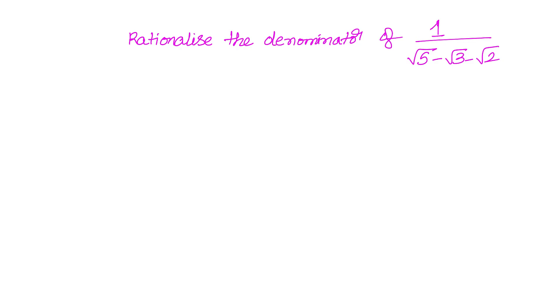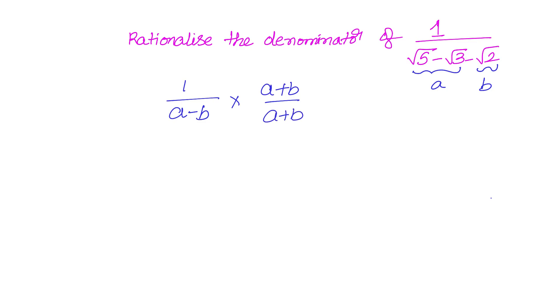We need to rationalize the denominator of 1 divided by (√5 − √3 − √2). This is for ninth grade. What we will do is take part of the expression as 'a' and another part as 'b'. If we have something like 1 by (a − b), we multiply with (a + b) to rationalize the denominator. If not possible in one step, we'll do one more round.